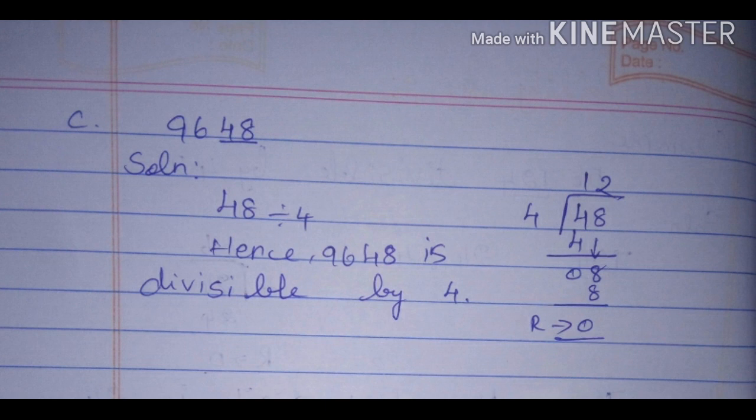Next, Divisibility by 5. What is the rule? A number is divisible by 5 if the digit in the unit place is 5 or 0. So, if the unit digit is 0 or 5, the number is divisible by 5.